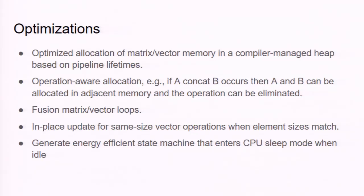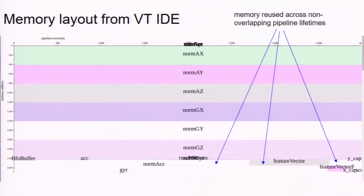We also generate an efficient state machine that automatically enters CPU sleep mode when idle. A traditional static allocator allocates along the linear address line. Our allocator works in a 2D space where the y-axis is the address line and the x-axis is the pipeline lifetime. We want to fill this entire area optimally. You can see that two buffers share the same address region because they have different lifetimes. This memory layout output is automatically generated from our IDE.